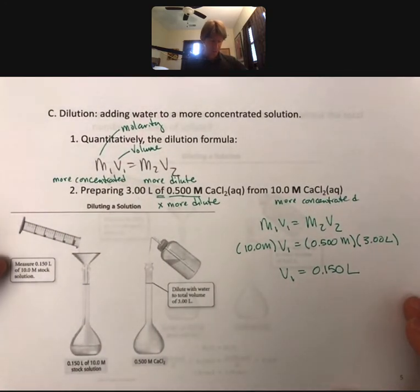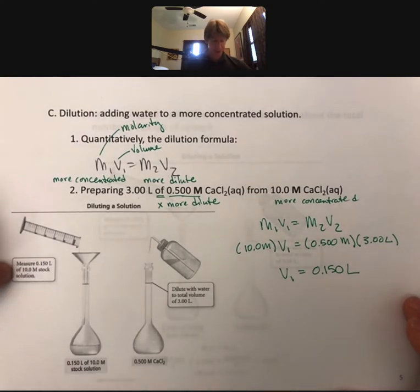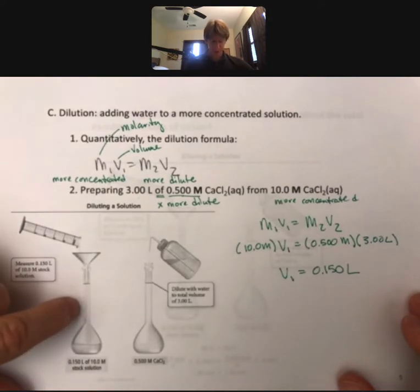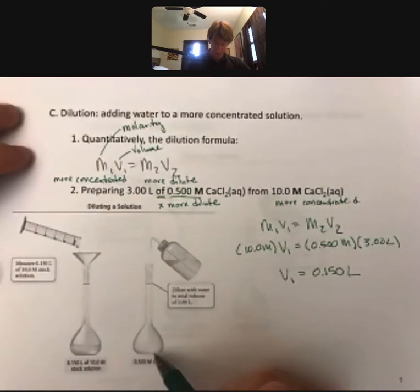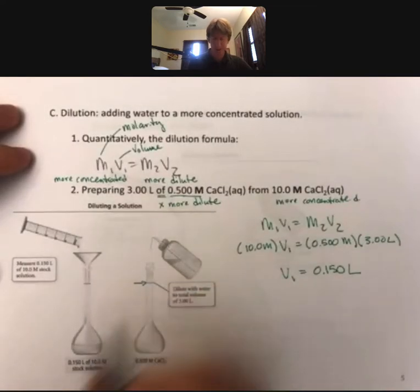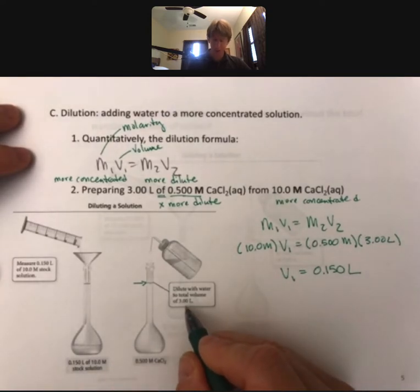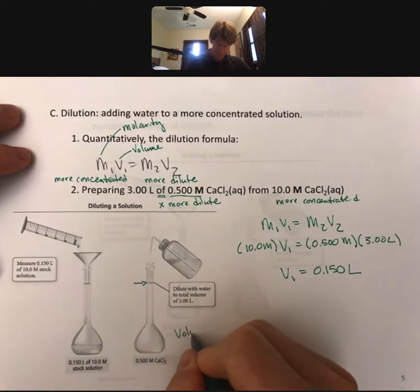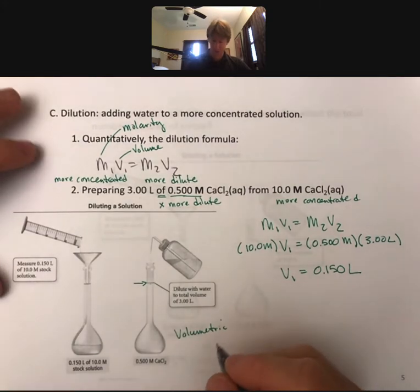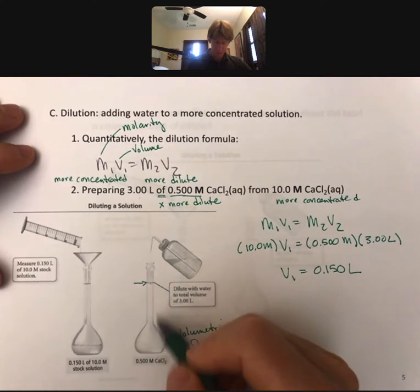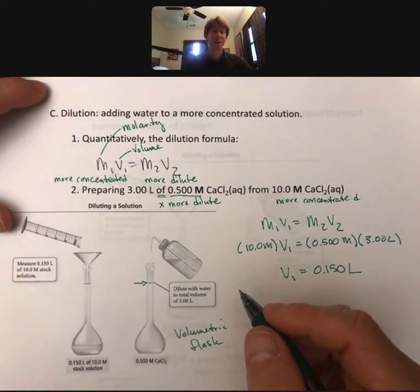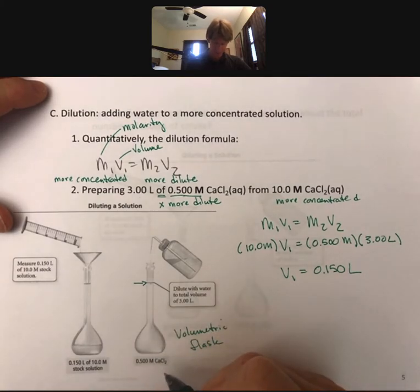How do we actually do this? We would measure 0.150 liters of a 10.0 molar stock solution, our more concentrated solution. We're going to put it in a volumetric flask so that we're doing this precisely. Volumetric flasks have a high level of accuracy. Then we're going to dilute with water all the way up to the mark, because this mark is exactly the volume we're looking for. This is a 3.00 liter volumetric flask. We're starting to see that having a volumetric flask is important for doing things quantitatively and precisely. Then we put a cap on this and mix it up to make sure it is equally distributed throughout the solution. That's how you do a dilution.